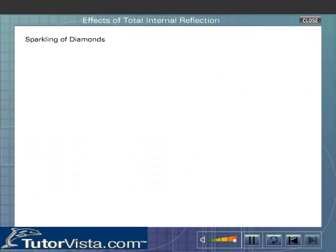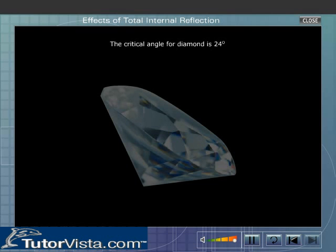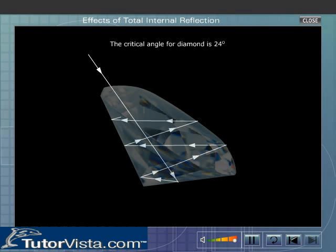Therefore, most of the incident rays suffer total internal reflection. Moreover, the diamonds are usually cut with their faces in such a way that once a ray of light enters it, it suffers total internal reflections at various faces before it has any chance to emerge.